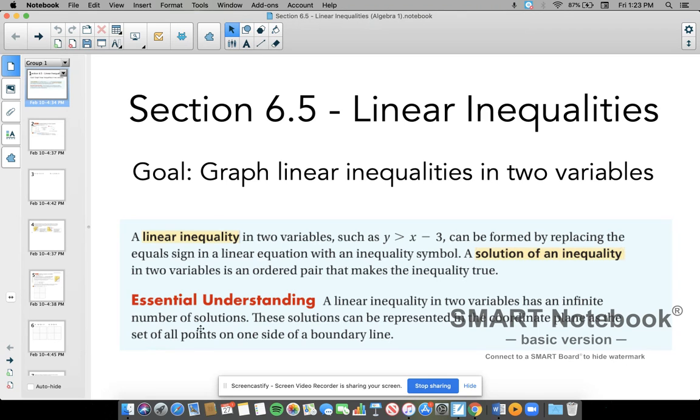A solution of an inequality in two variables is an ordered pair that makes the inequality true. So basically in this case, it's any value for x and y. Remember, if you pick an x and y, you're talking about a point.